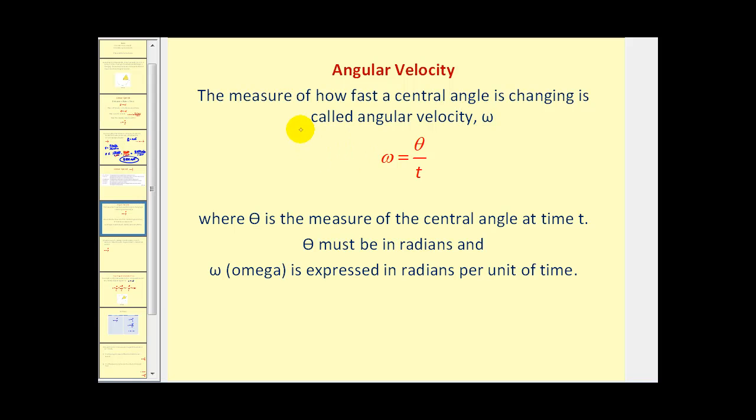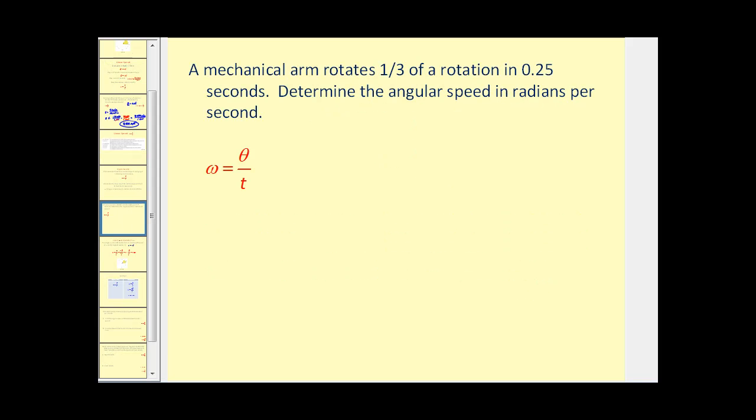The measure of how fast the central angle is changing is called angular velocity. Typically they use the lowercase Greek letter omega. So omega is equal to theta divided by t, where theta is the measure of the central angle at time t. Theta must be in radians, and omega is expressed in radians per unit of time.